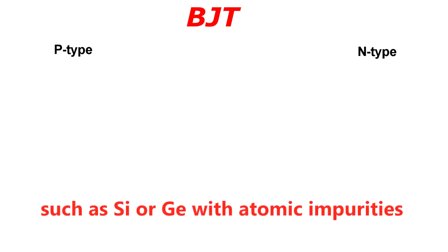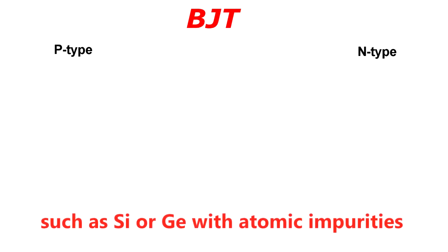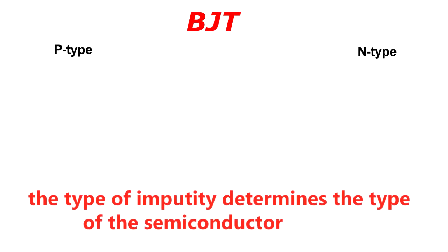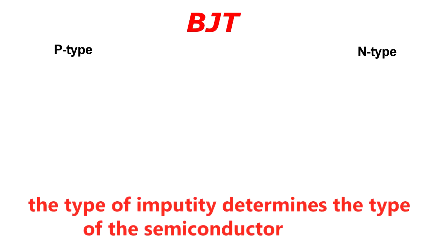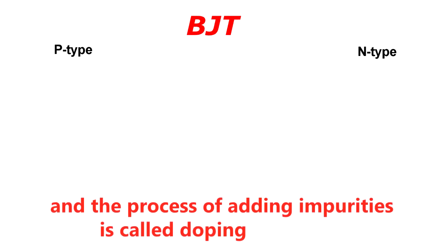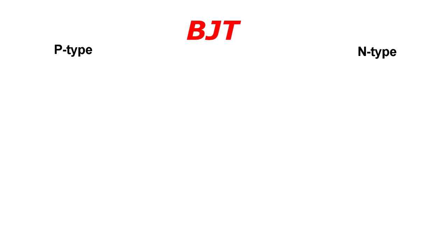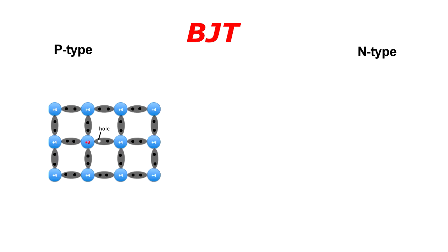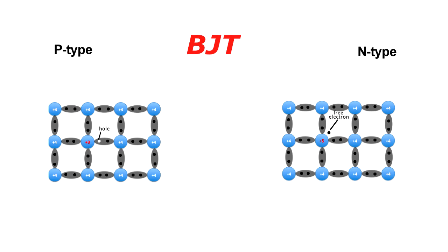Such as silicon or germanium with atomic impurities. The type of impurity determines the type of the semiconductor, and the process of adding impurity is called doping. All you need to know is that P-type has more holes than electrons, and the N-type has more electrons than holes.